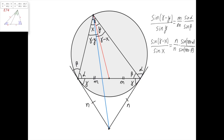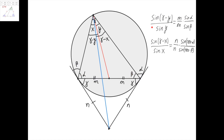Let's apply the law of sines for this triangle and this triangle. We get that sin of (gamma minus y) divided by sin of y equals m divided by m, times sin of alpha divided by sin of beta.